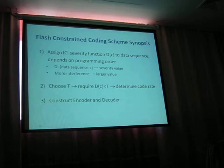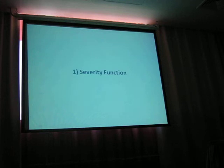The severity function depends on the programming order we program the data to the flash. On the second step, we choose T to restrict this severity function and determine the code rate. And lastly, we construct encoder and decoder models. So let's see the severity function.